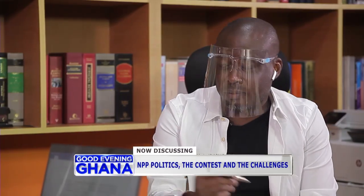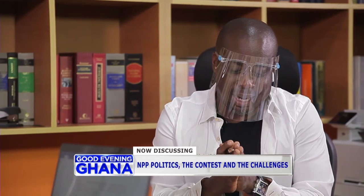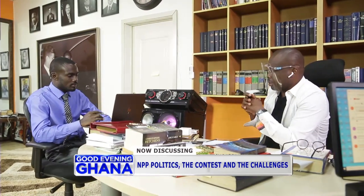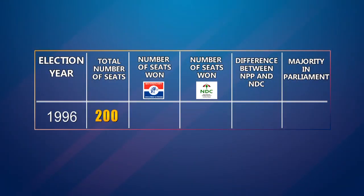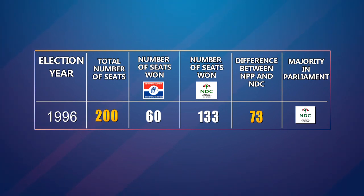Looking at 1996: 200 seats were up for grabs. The NPP secured 60, and the NDC won 133 seats — a difference of 73. NDC led NPP by 73 out of 200, which is a huge number. That was the 1996 election.